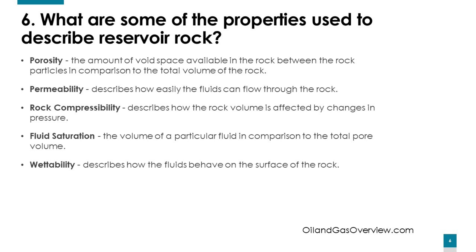What are some of the properties used to describe reservoir rock? Porosity is the amount of void space available in the rock between the rock particles in comparison to the total volume of the rock. Permeability describes how easily fluid can flow through the rock. Rock compressibility describes how the rock volume is affected by changes in pressure. Fluid saturation is the volume of a particular fluid in comparison to the total pore volume. Wettability describes how fluids behave on the surface of the rock.